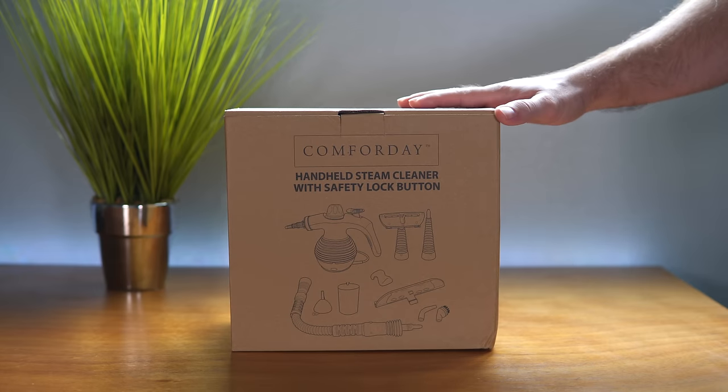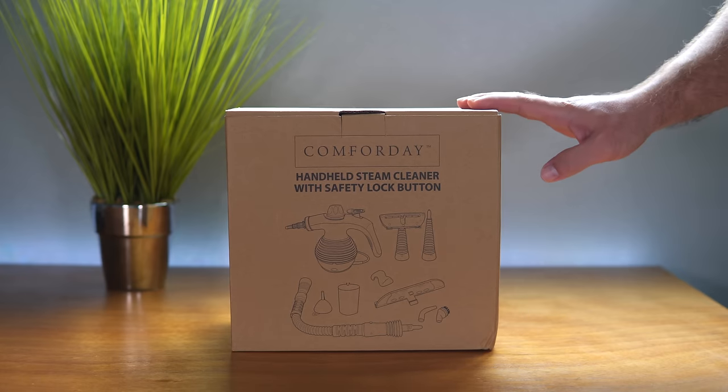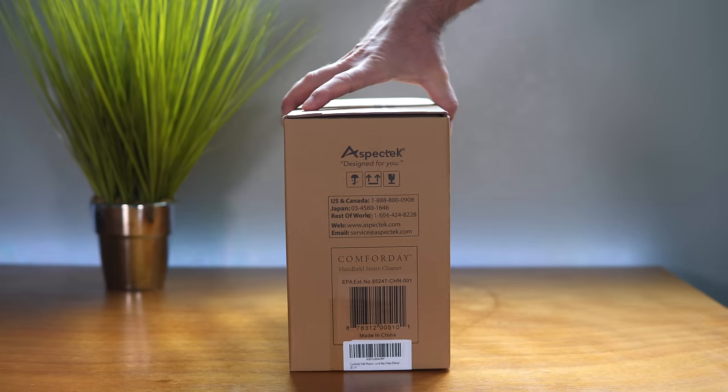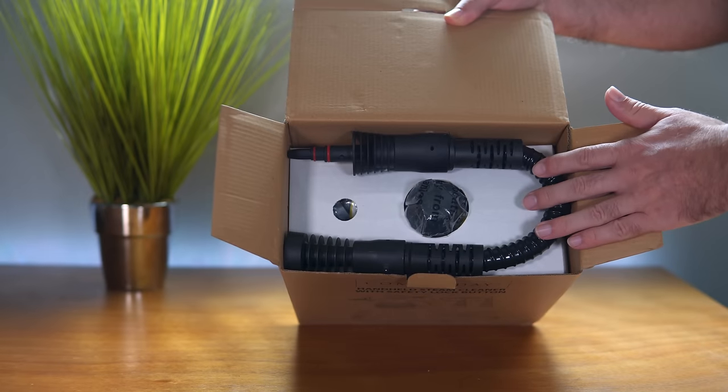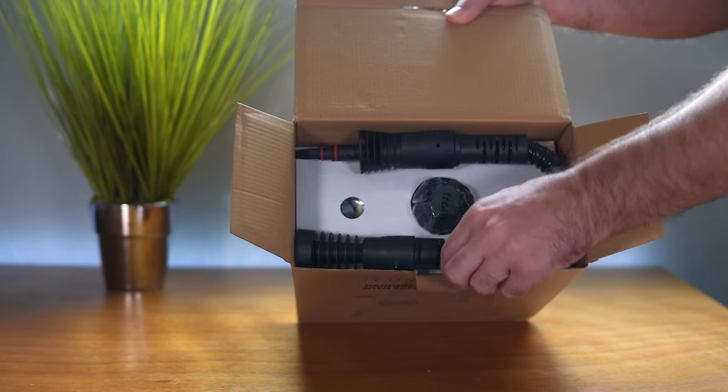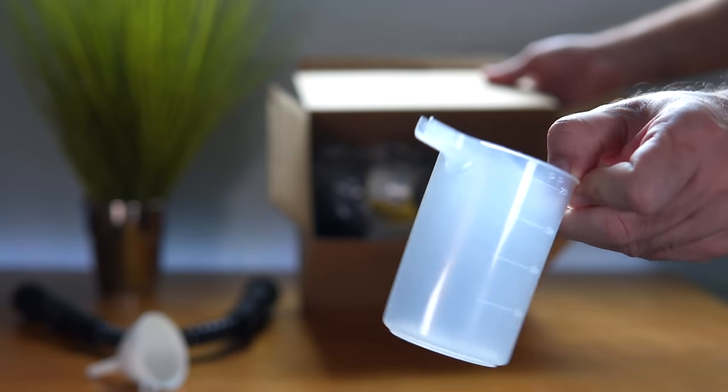This is the box it comes in. As you can see here, there's a picture of all the items that are included, and the company name is Comforday. It's a decent sized box. Let's open it up and see what it looks like. The first thing on top is a hose, looks to be an extension of some sort, a funnel, and a measuring cup.